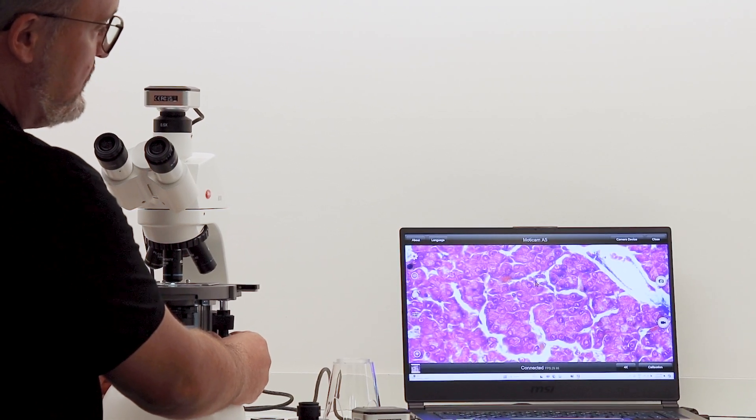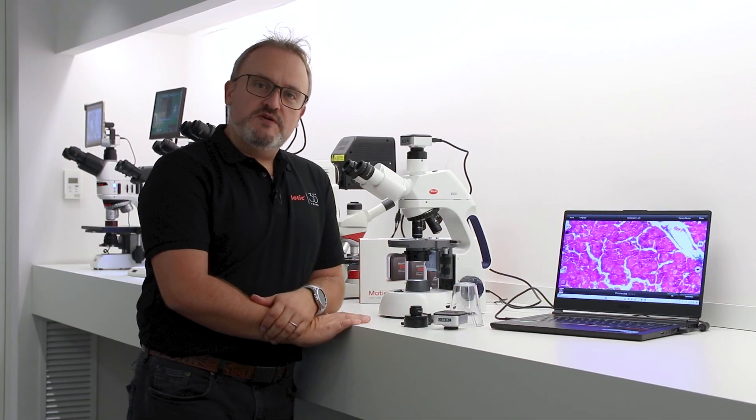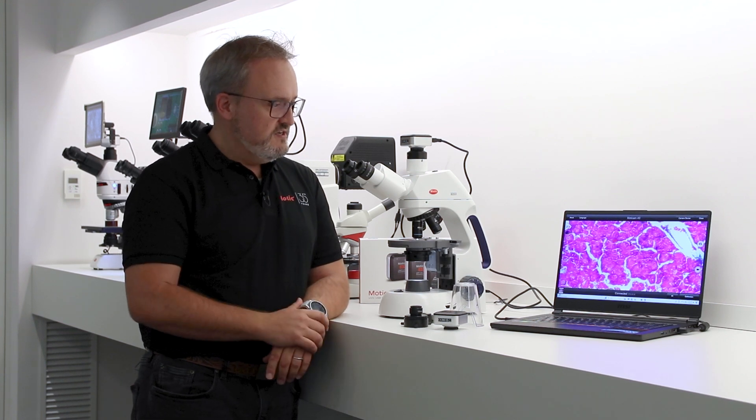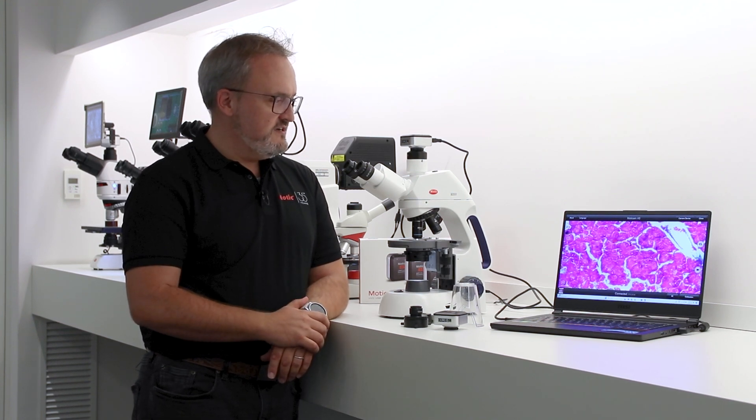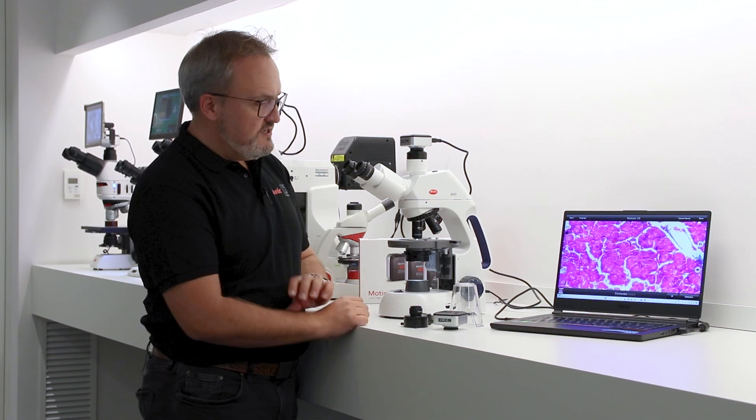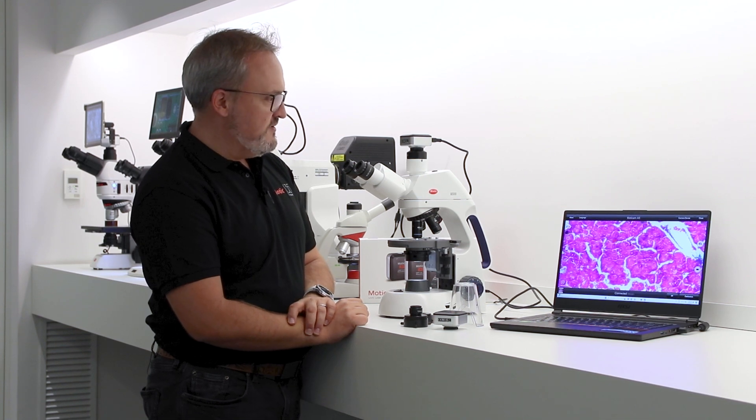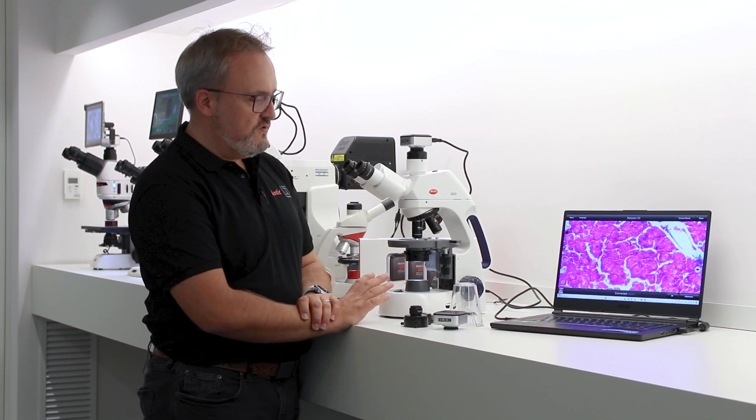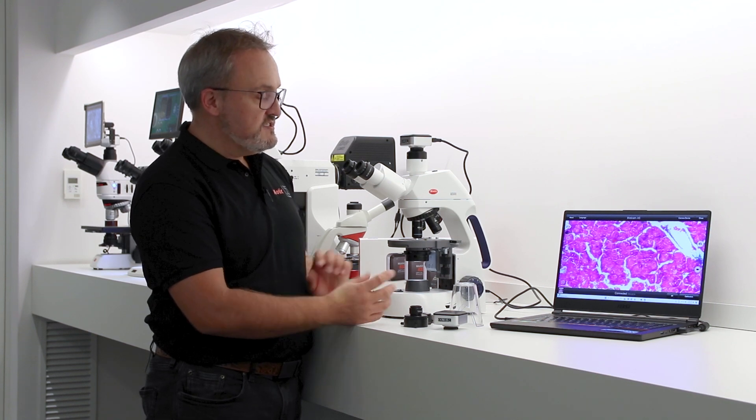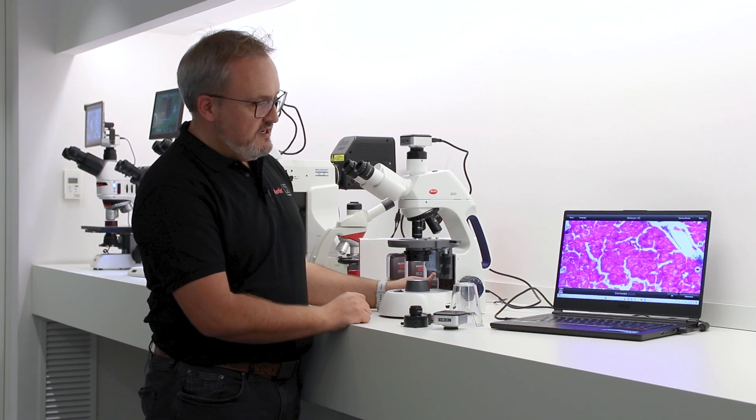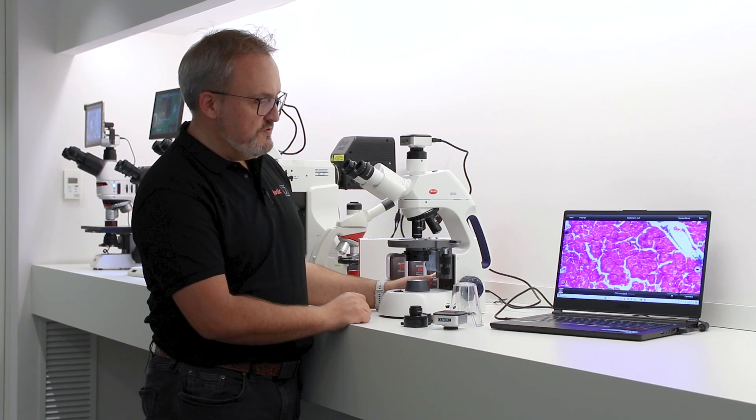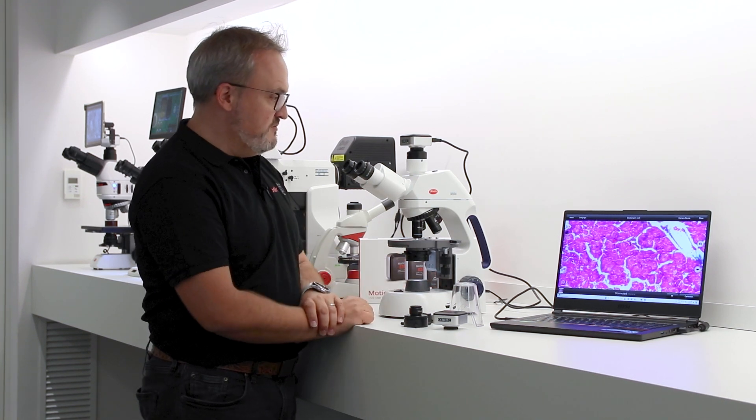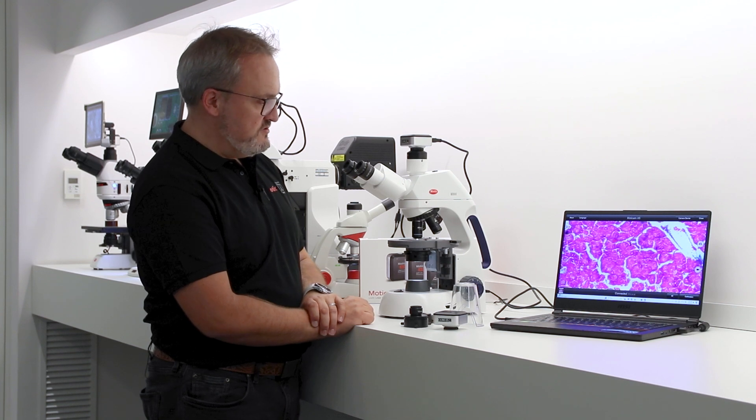The A5, the 5 stands for it can do up to 5 megapixel live transmission onto your computer, so you can really see things in high detail. With it being a specifically manufactured camera with sensor for microscopy, it means that you can still, even with 5 megapixels, achieve very fluid 29 to 30 frames per second on your live image on your screen.